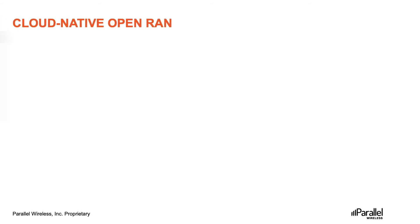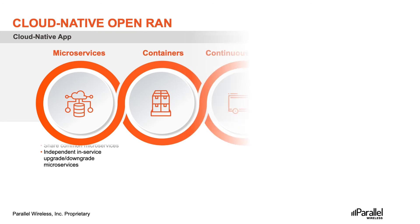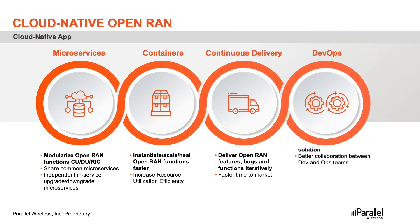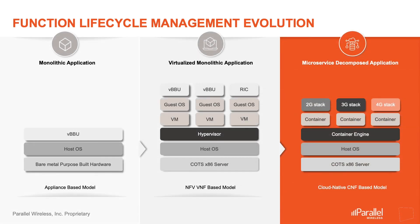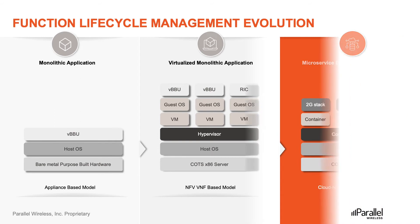Cloud-native Open RAN has four key ingredients: microservices-based architecture, lightweight container-based solution, CI/CD to support agility, and DevOps for better collaboration and flexibility. Virtualization and software-based solutions have become the norm in telecom networks. Network functions evolved from purpose-built hardware to NFV with VM-based infrastructure, and more recently to cloud-native network functions (CNFs), which are gaining prominence for their associated benefits.